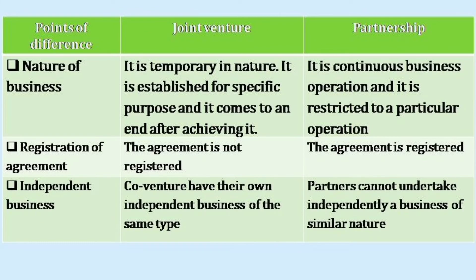The next difference is nature of business. Joint venture is temporary in nature — it is established for a specific purpose and it comes to an end after achieving it. Whereas a partnership firm is a continuous business operation and it is not restricted to a particular operation.